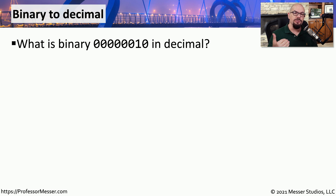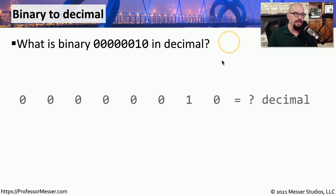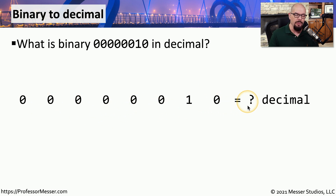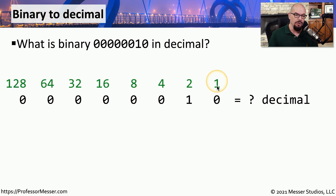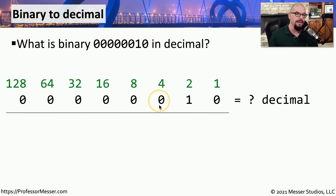Using our conversion chart, let's do a binary calculation. This first question asks: what is binary 00000010 in decimal? We write out this byte in bit form — 00000010 — and we want to know what the decimal equivalent is. We put our conversion chart right on top: 1, 2, 4, 8, 16, 32, 64, and 128. Every place there is a binary 1, we bring down the number from our chart. Every place there's a binary 0, we bring down a 0.